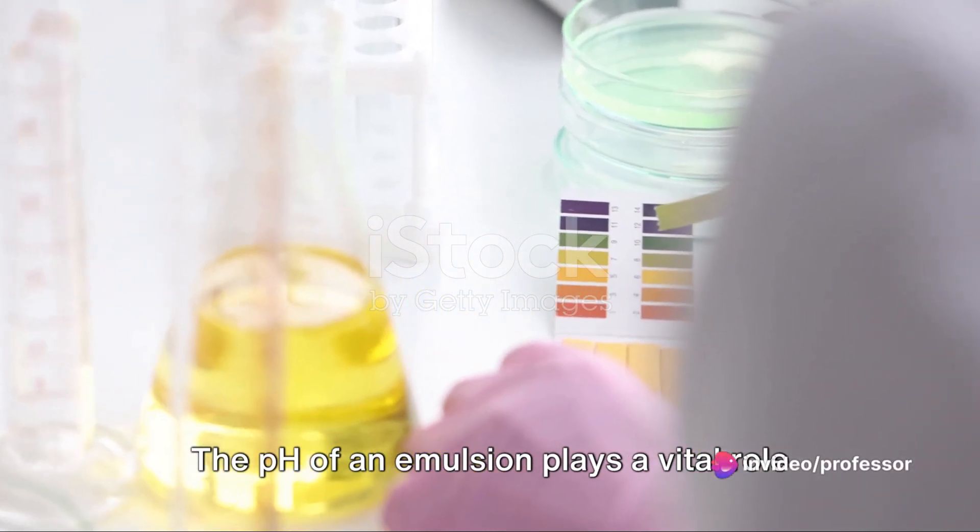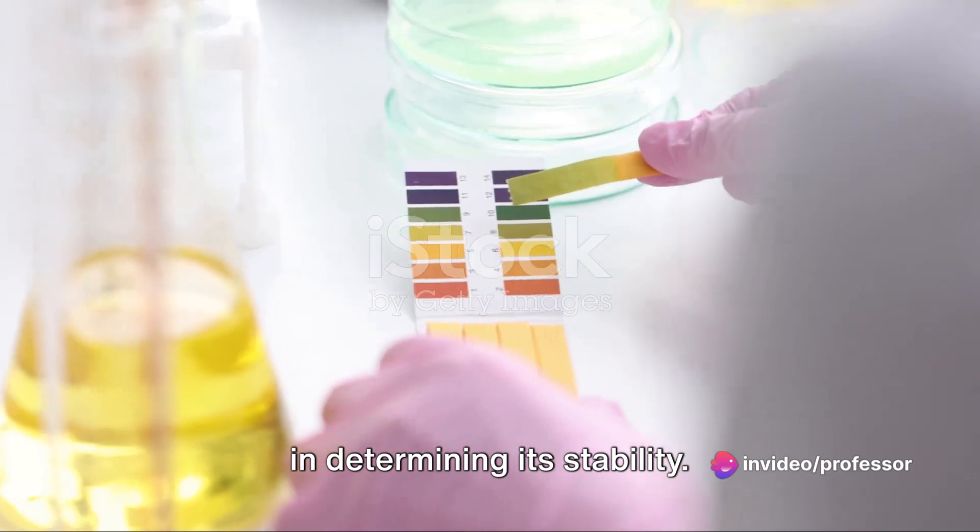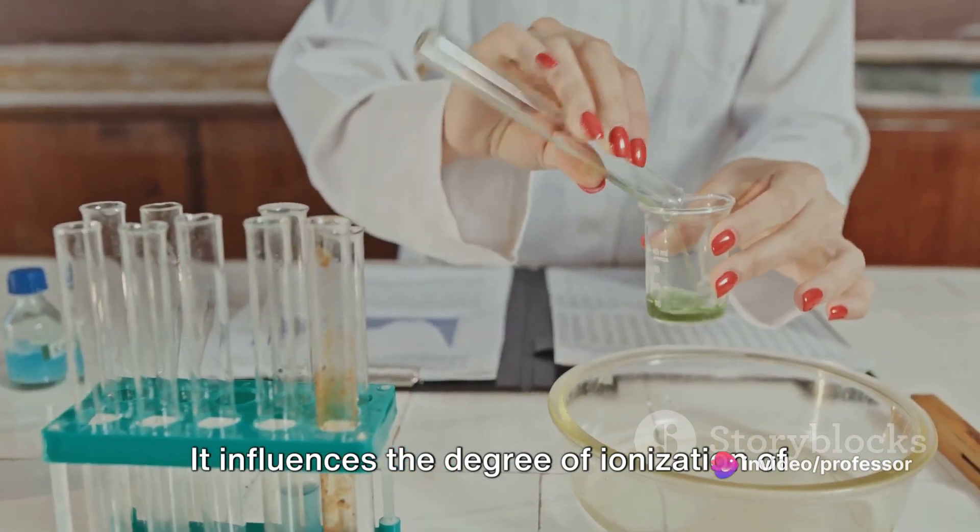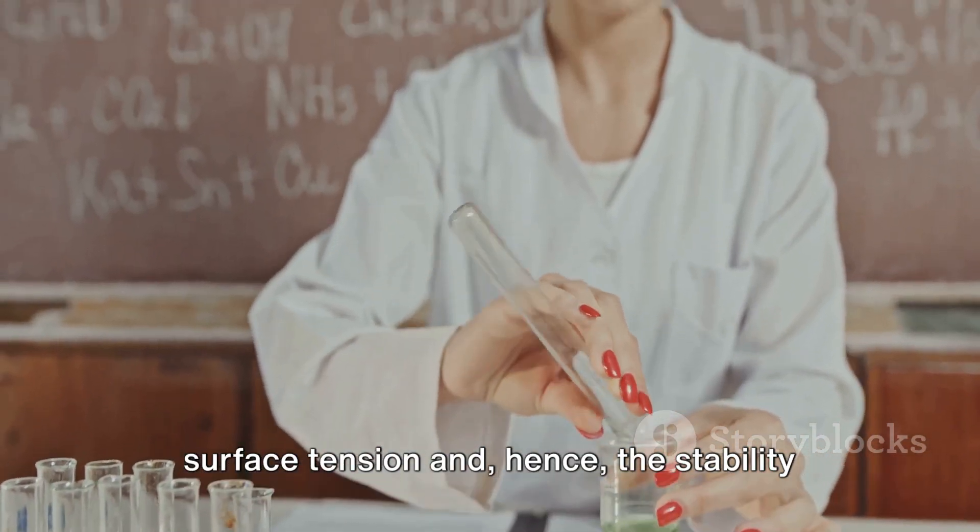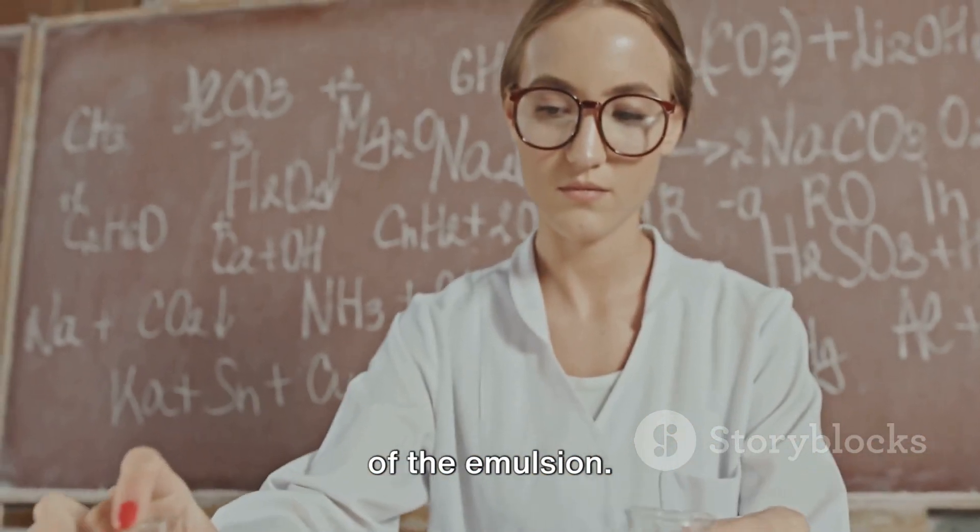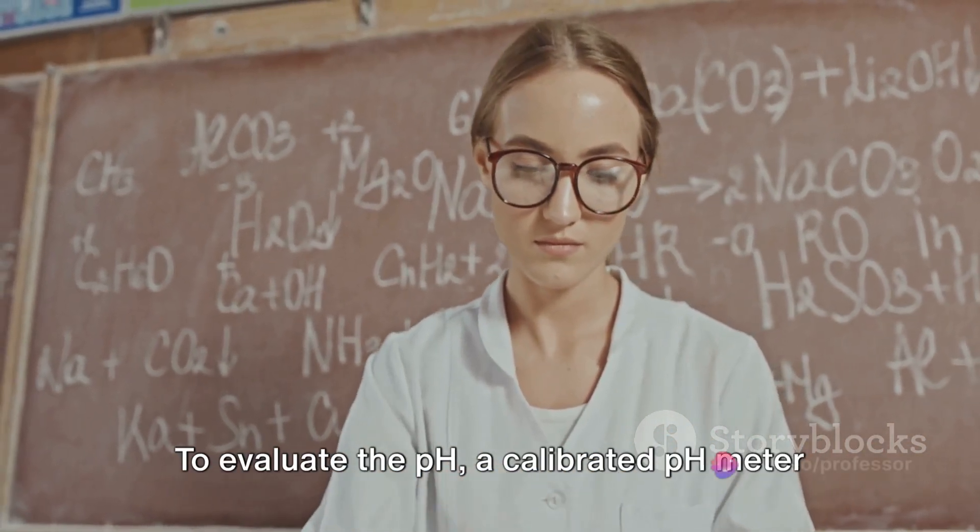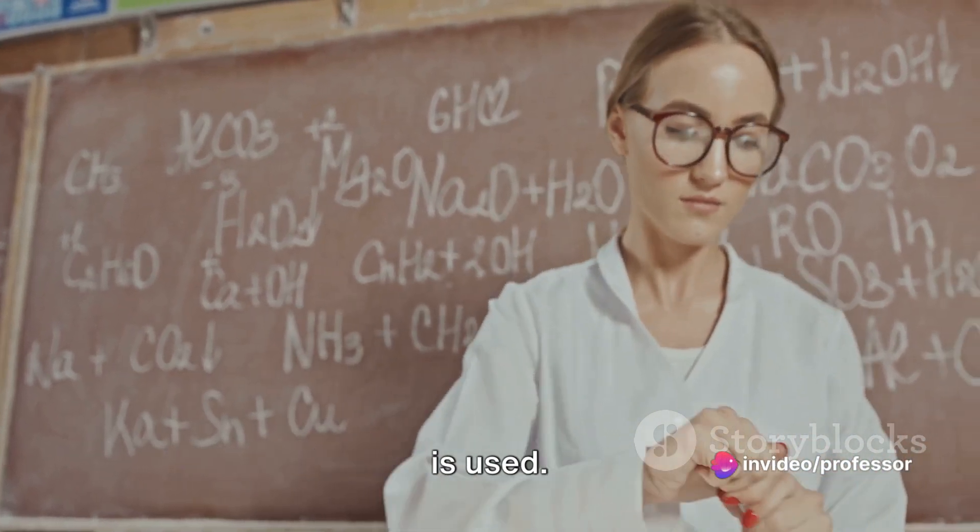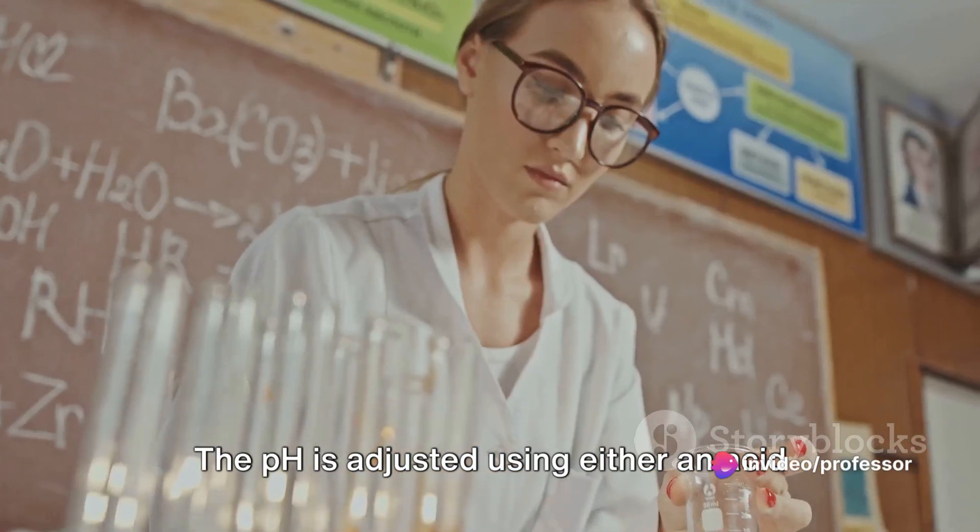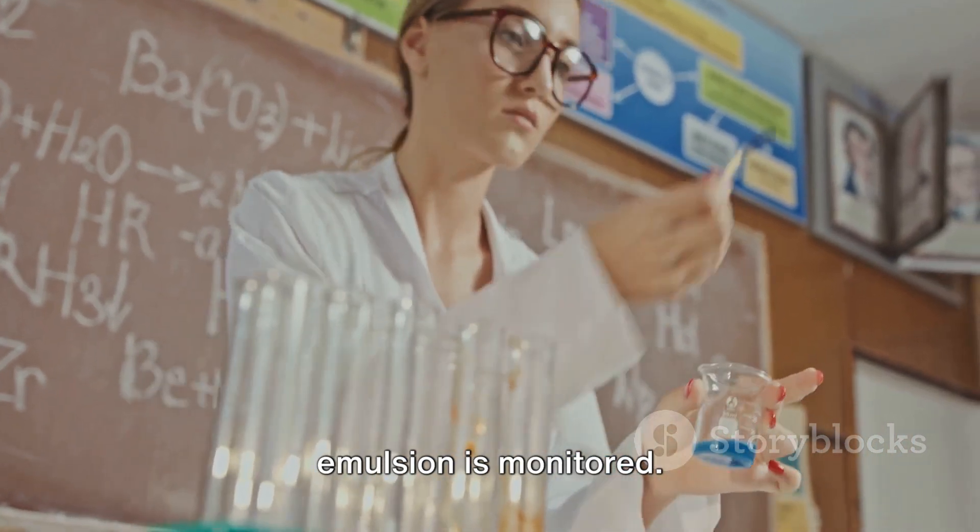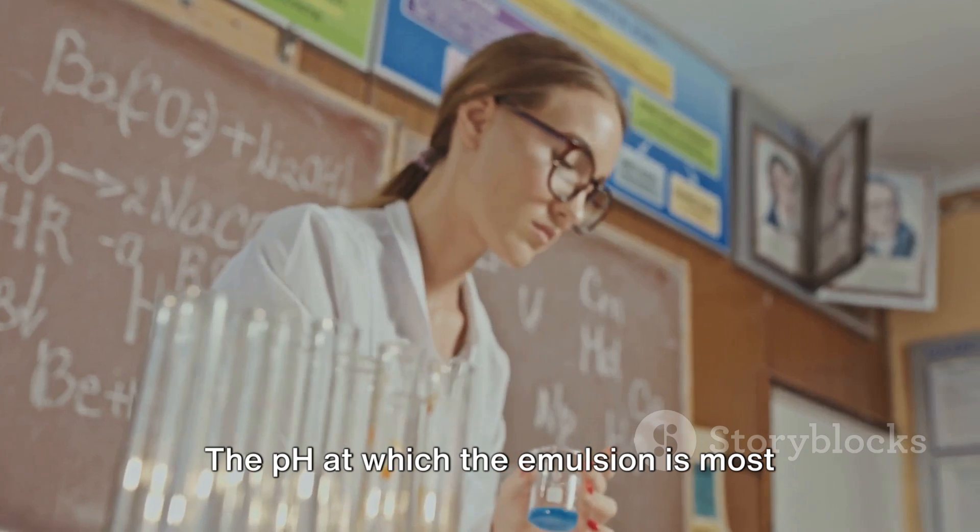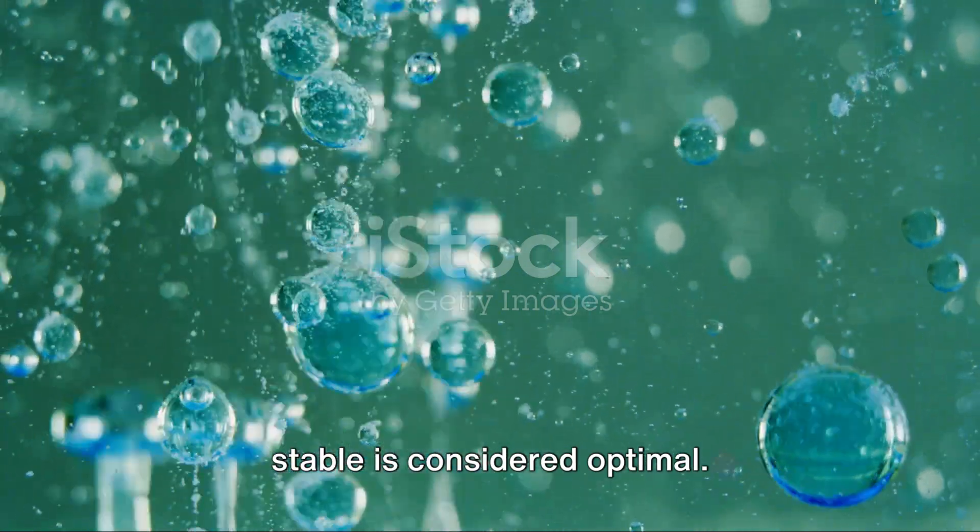The pH of an emulsion plays a vital role in determining its stability. It influences the degree of ionization of the surfactant, which in turn affects the surface tension and hence the stability of the emulsion. To evaluate the pH, a calibrated pH meter is used. The pH is adjusted using either an acid or a base, and the stability of the emulsion is monitored. The pH at which the emulsion is most stable is considered optimal.